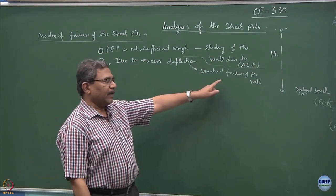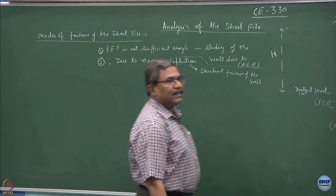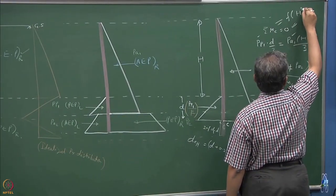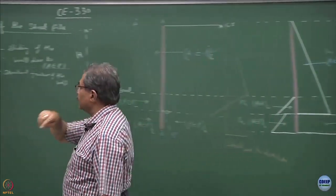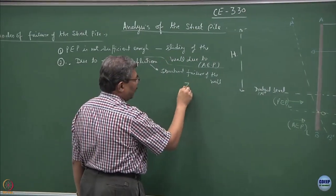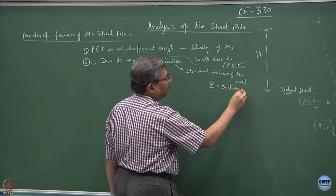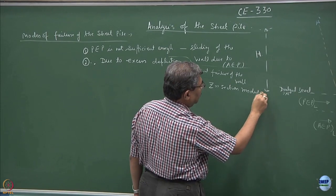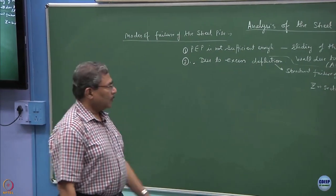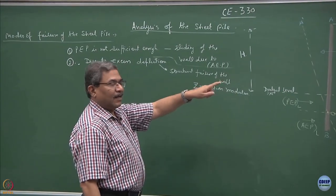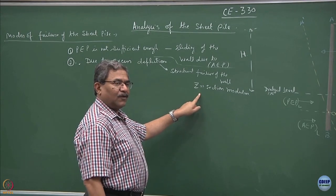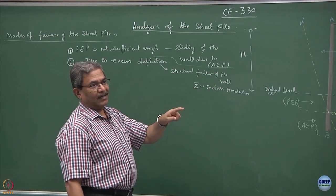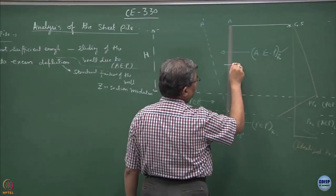The second possibility is excessive deflection — if excessive deflection takes place, the sheet pile has yielded, which is structural failure. This can be corrected by assuming a proper section modulus because the moment function is a cubic function. If you know the bending moments, you can select a section modulus: knowing the distance y from the neutral axis and the moment of inertia gives the structural design of the element.